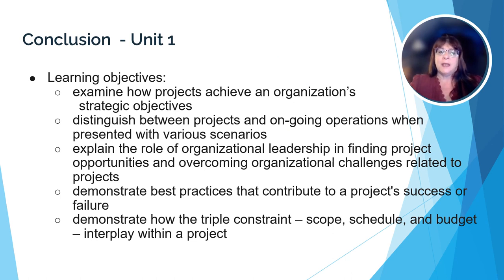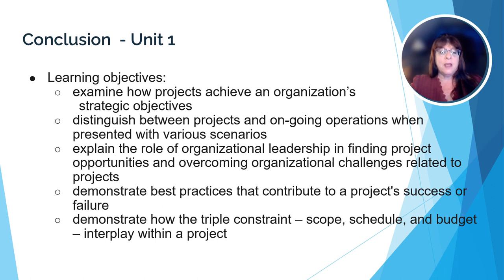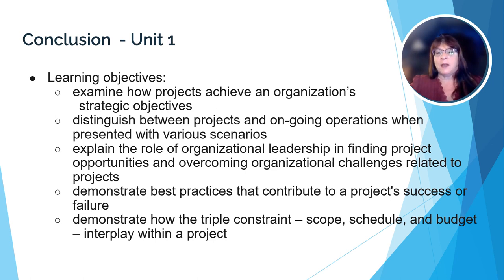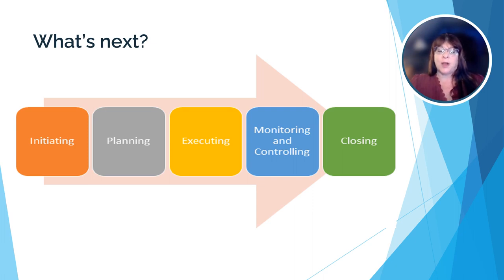In this unit, we've begun to see how projects are related to the organization's strategic objectives. We've learned how a project is different from an organization's ongoing operations, and we've learned how projects are chosen and who is responsible for choosing which projects get implemented. Additionally, we've looked at the characteristics of project success and how easily a project can fail. Finally, we learned about the triple constraint theory, which recommends keeping scope, schedule, and budget in alignment in order to increase the likelihood of having a successful project. In the next unit, we'll look at the project lifecycle.